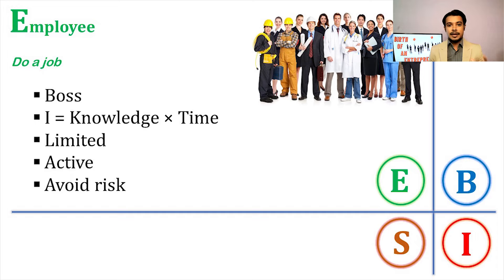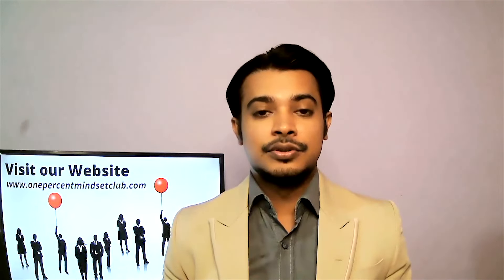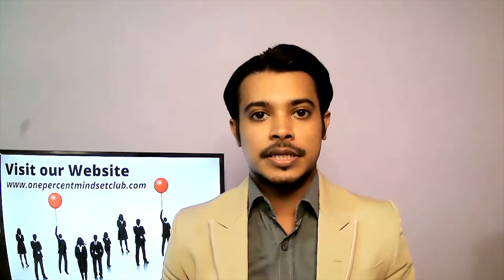Another characteristic of employee category people is that they avoid risk. Even though they are not happy with the circumstances in the E quadrant, they are afraid to take a risk and change the way they are living. They want change but are afraid to take that step. However, a few people who are not ready to work under someone else for the rest of their lives decide to take a risk and start doing their own job.